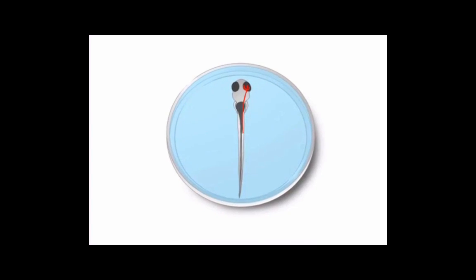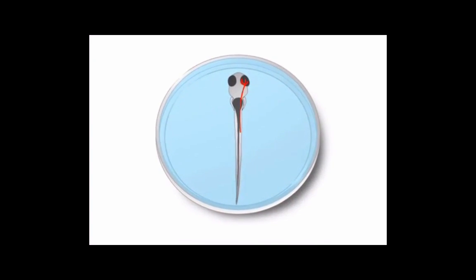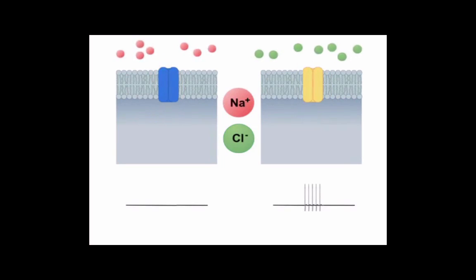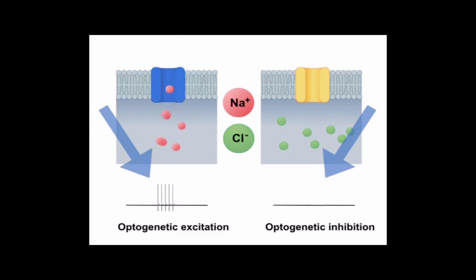Neural circuitry can also be investigated using optogenetics in which neurons are modified to express light-sensitive ion channels. When exposed to light, these channels open, and depending on their ion selectivity, they can either inhibit or excite the neuron, which provides insight into what role that neuron plays in a particular circuit, and the behavioral response governed by that circuit.